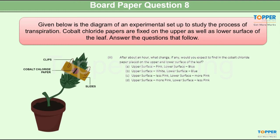Question 3. After about an hour what change would you expect to find in the cobalt chloride paper placed on the upper as well as the lower surface of the leaf? Well the answer to this question is option C. The upper surface of the leaf would be less pink in color while lower surface would be more pink in color. This is a very obvious observation because more number of stomata are present on the lower surface of a dicot leaf.